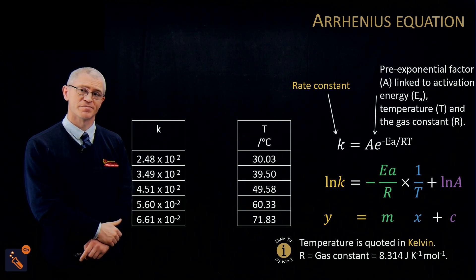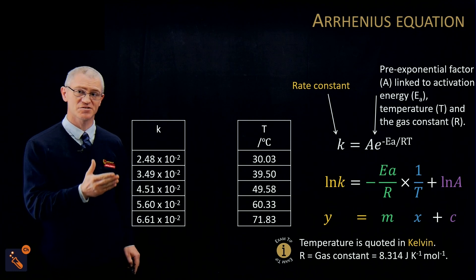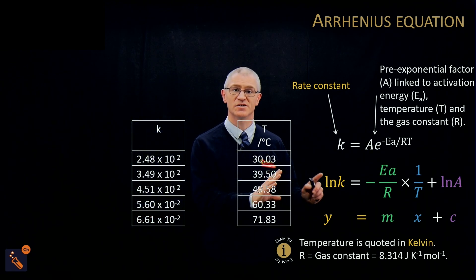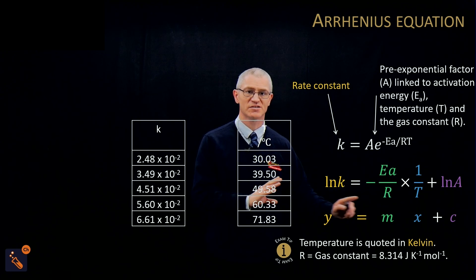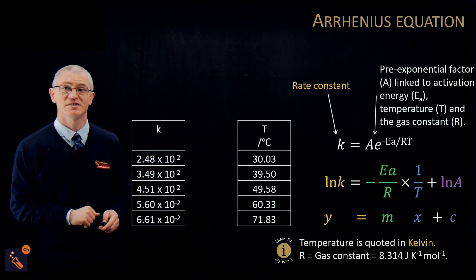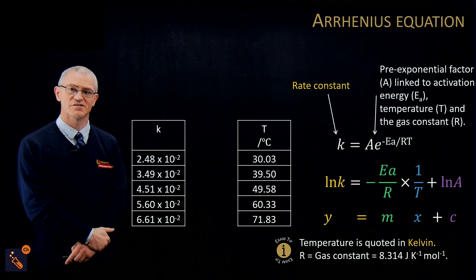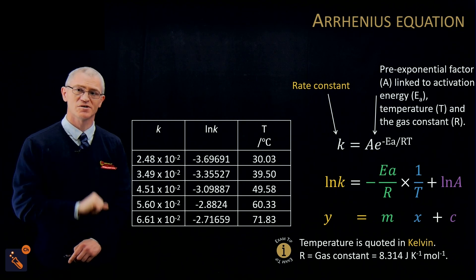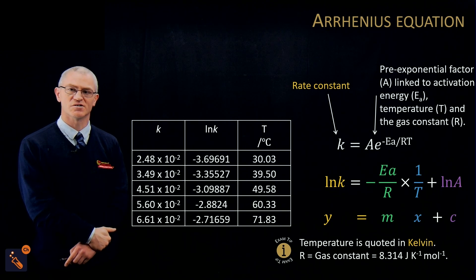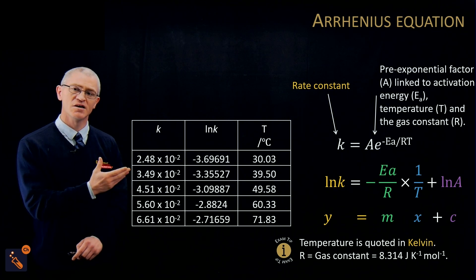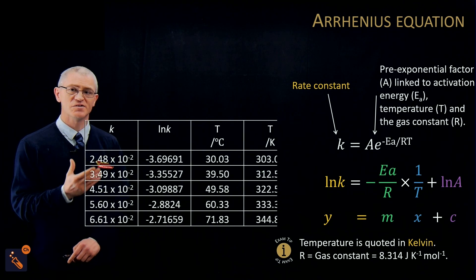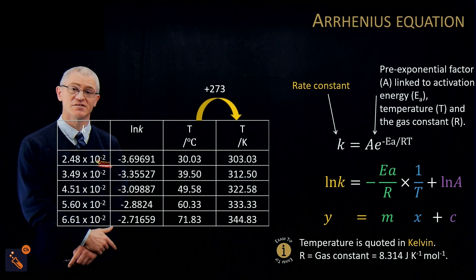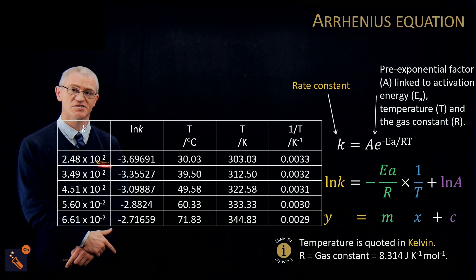If that's the case, we can plot that data — at different temperatures we get different values of k. You need to convert those into natural log of k and 1/T as your y and x values. For the first one, natural log of k is just pressing ln on your calculator — you get negative numbers. Then convert temperature to Kelvin by adding 273, and calculate 1/T. So we do 1 divided by T and we've got our data values.